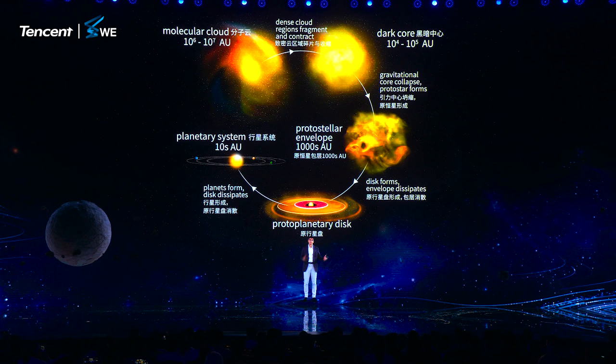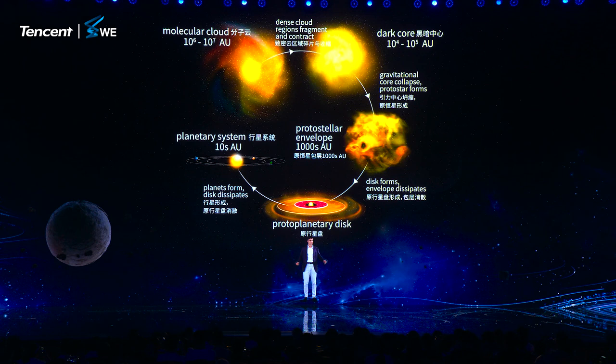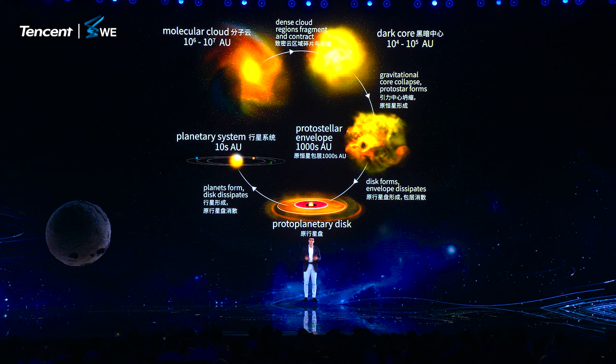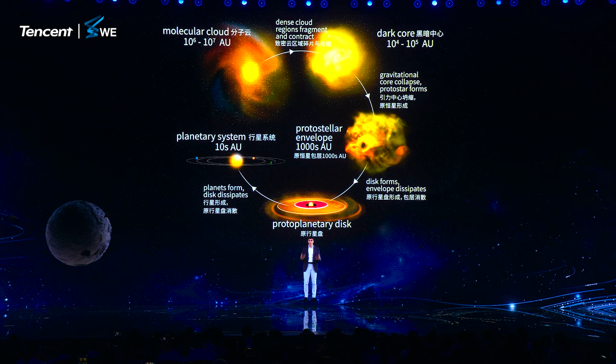Everything at the beginning is a big cloud of hydrogen. They collapse, they form stars, young stars, and then around the stars, sometimes with the leftover material, there are planets. This is what we call the planetary formation theory.